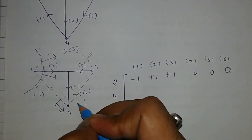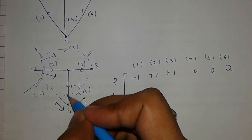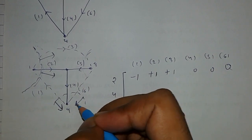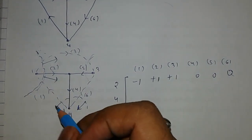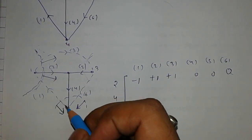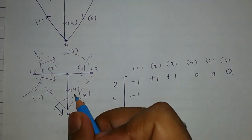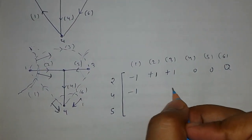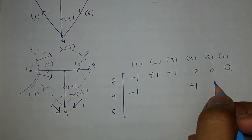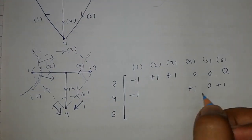For edge 4, take the cut here. The direction of edge 4 is towards the node, so the cut direction will also be towards the node. Edge 1 is away from the direction, so take it as minus one. Edge 4 is towards the direction, so take it as plus one. Edge 6 is towards the direction, so take it as plus one. The remaining are zero.